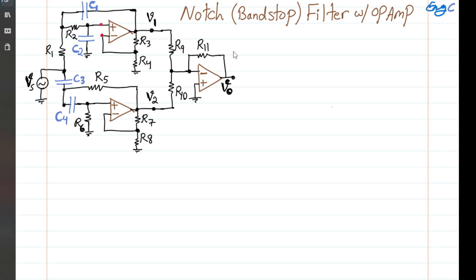A three op-amp based active circuit realizing a notch or band-stop filter is shown here. We want to understand how this works and find Vout as a function of input voltage Vs in sinusoidal steady-state analysis. Assuming all op-amps are not saturated and are in linear mode of operation, properly biased, and all of them are in negative feedback, virtual short holds for all three — meaning the voltage at the negative terminal equals the voltage at the positive terminal.